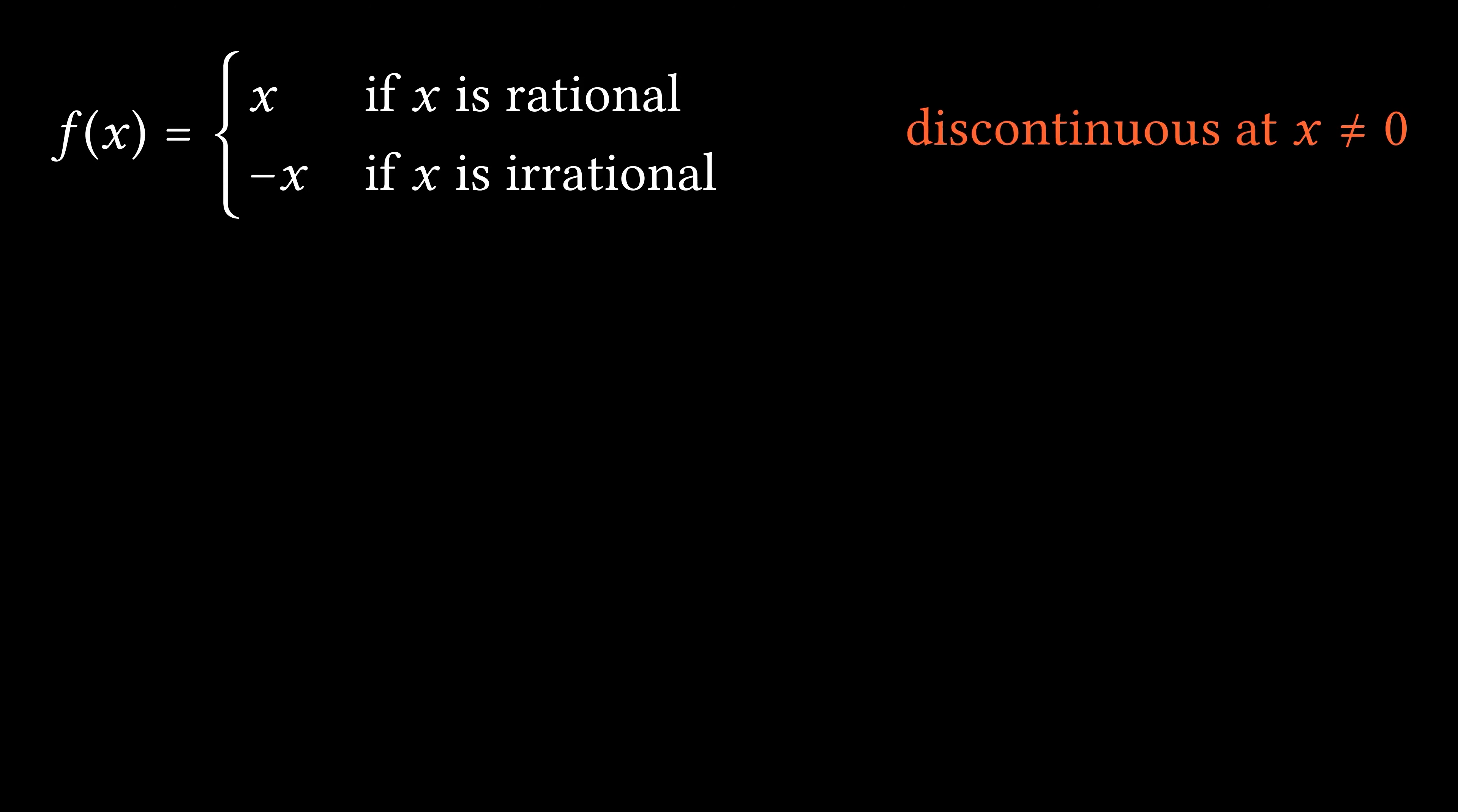Let's understand why this function is discontinuous at all other points. Take any non-zero real number A, and let epsilon equal the absolute value of A.